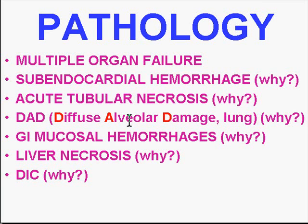Why diffuse alveolar damage? Release of cytokines, damage to endothelium, leakage of fluid — and the lungs then look like acute pulmonary edema with leakage of cells and proteins. That's the definition of diffuse alveolar damage, sometimes called adult respiratory distress syndrome. In the GI tract there are mucosal hemorrhages because GI mucosa is extremely sensitive to a lack of blood flow, and if blood flow fails there you're going to have hemorrhage as an infarct.